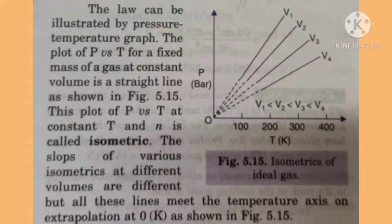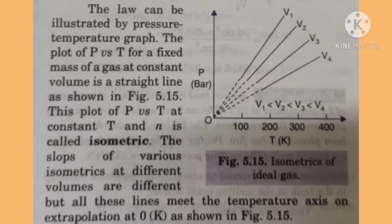The law can be illustrated by a pressure-temperature graph. The plot of P versus T for a fixed mass of gas at constant volume is a straight line as shown in the given figure. This plot of P versus T at constant N is called an isometric. The slopes of the various isometrics at different volumes are different.